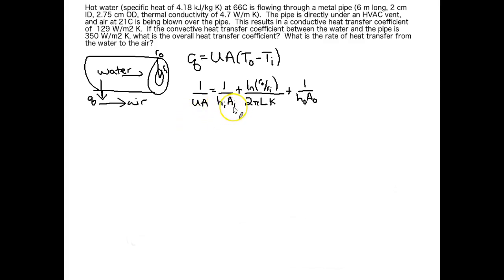Let's go through these terms one by one. This term right here, the 1 over HIAI term, is your term for the convection of heat between the water and the pipe. So the I's mean the inside of the pipe. This is the convection between the water and the pipe wall.